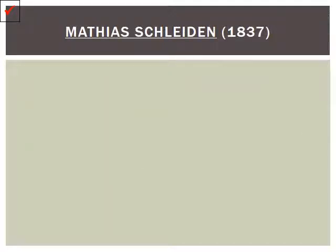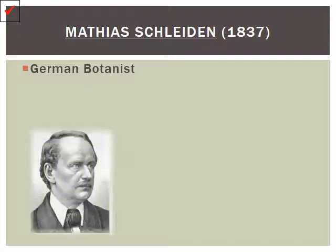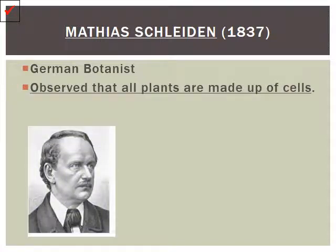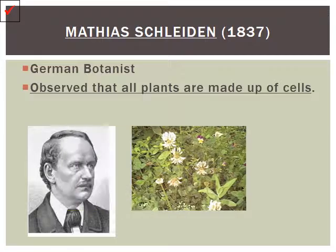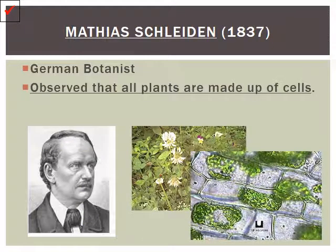Up next is Matthias Schleiden. He was a German botanist, and he was the first to observe that all plants were made up of cells. He looked at plants underneath a microscope and saw these little rectangular structures — plant cells. Simply put, plants are made of plant cells.